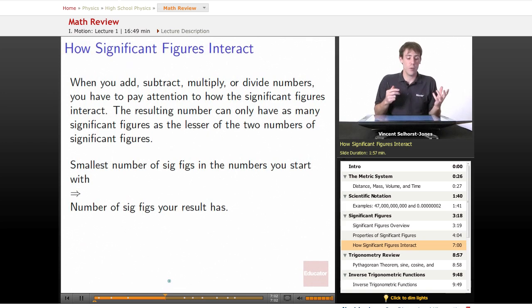How do significant figures interact? When you add, subtract, multiply, or divide numbers, we pay attention to how sig figs interact. The resulting number can only have as many significant figures as the lesser of the two numbers. The smallest number of sig figs you start with becomes the number your result has. This makes sense. If I have a mass of precisely 75.000 kilograms, but get on a boat with somebody who weighs about 80 kilograms, I can't say together we weigh precisely 155.000 kilograms.